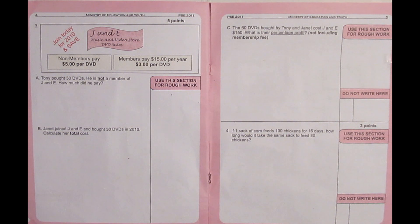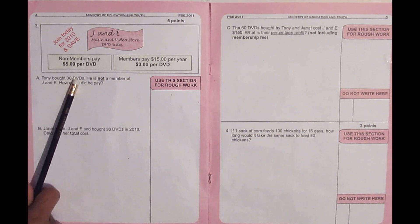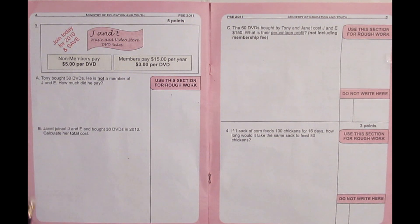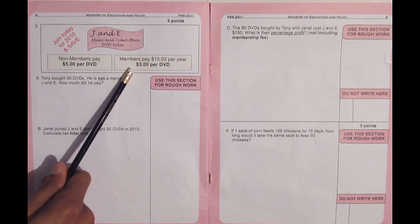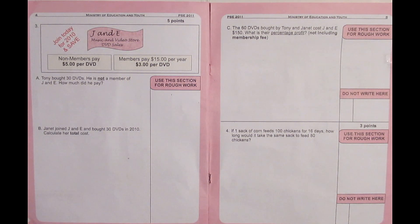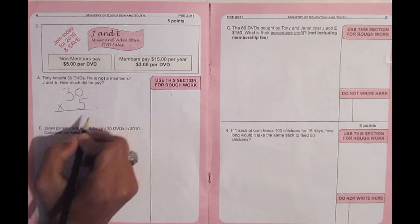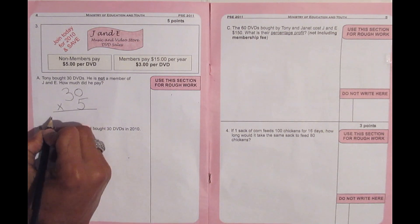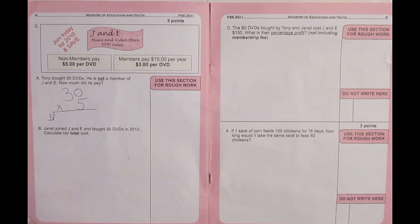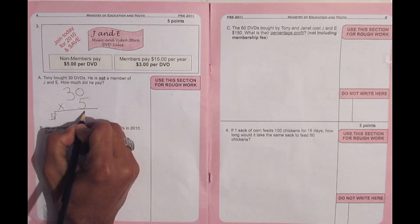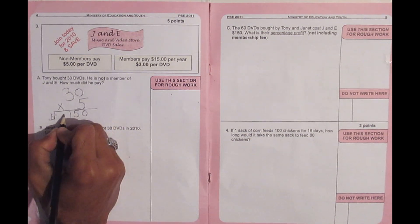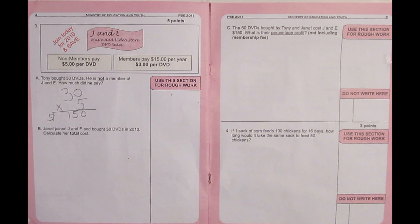The problem has parts A, B, and C. Part A says Tony bought 30 DVDs and he is not a member of G&E — how much did he pay? Since Tony is not a member, he pays $5 per DVD. He didn't pay the $15 membership fee, so it's 30 times $5. That gives us $150. Tony paid $150 for those 30 DVDs.